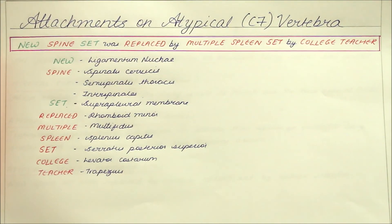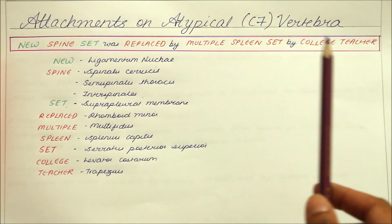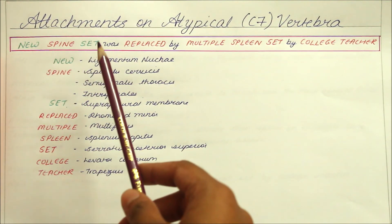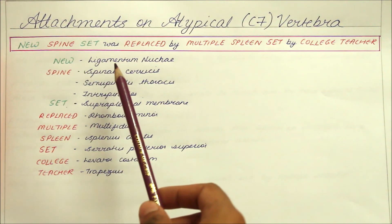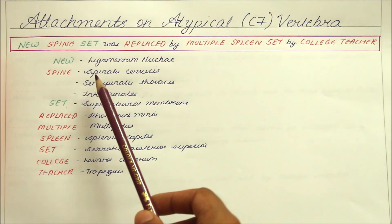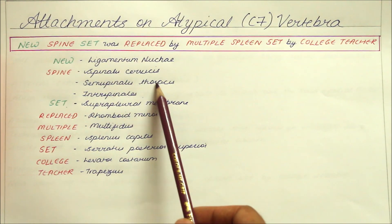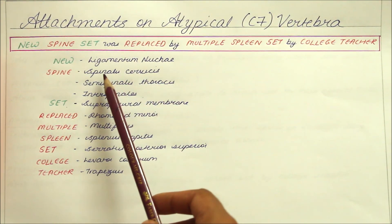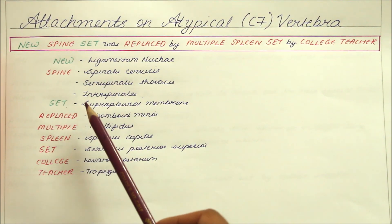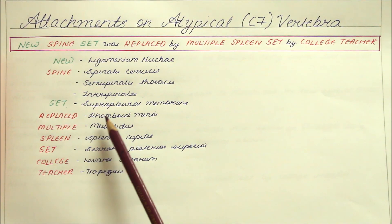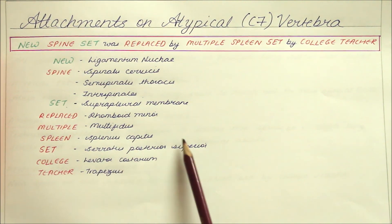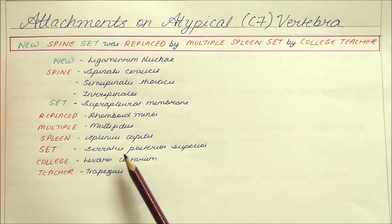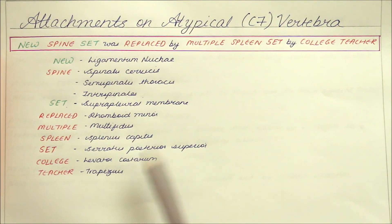An easy way to remember the attachments on the atypical C7 vertebra: the mnemonic is 'New spine set was replaced by multiple splint set by the college teacher.' 'New' = ligamentum nuchae; 'spine' = spinalis cervicis, semispinalis thoracis, interspinalis; 'set' = suprapleural membrane; 'replaced' = rhomboid minor; 'multiple' = multifidus; 'spleen' = splenius capitis; 'set' = serratus posterior superior; 'college' = levator costarum; 'teacher' = trapezius.